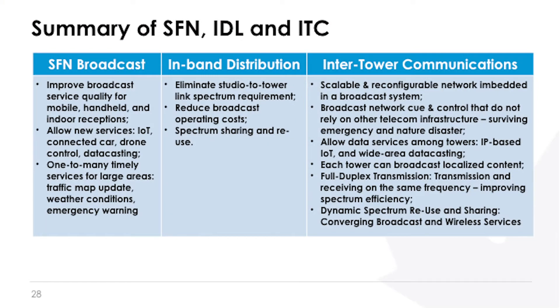Here is a summary of all these systems: we have SFN broadcasting, in-band distribution, and inter-tower communications. This can be part of ATSC broadcast core networks. This network is totally independent of any telecommunication infrastructure. The Internet is not a reliable communication system — if it fails, the broadcast system shouldn't fail. The emergency alert system cannot be allowed to fail. But if you have this system, you are standing alone. Broadcast can run a very robust network that can survive natural disaster, terrorist attack, or anything — even if the other infrastructure fails.